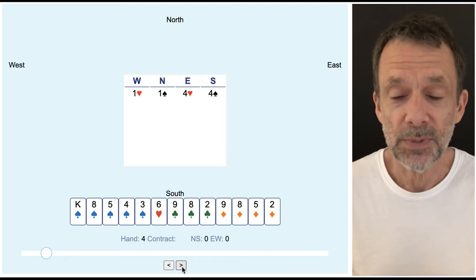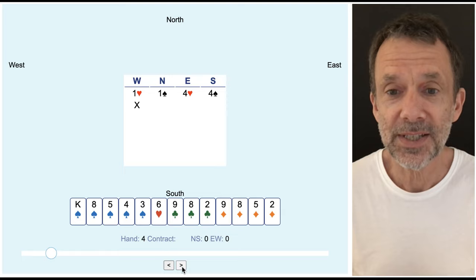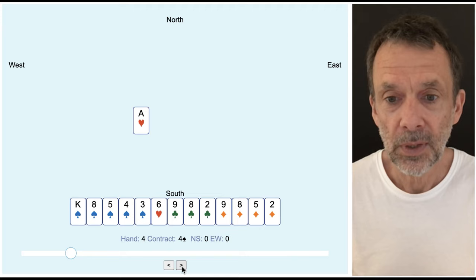I know we've got a big spade fit. We just don't have many points between the two hands. West doubles. Sort of no surprise there. And that's the finish of the bidding.